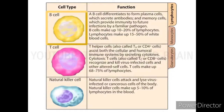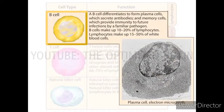A B cell differentiates to form plasma cells, which secrete antibodies, and memory cells, which provide immunity to future infections by a familiar pathogen. B cells make up 10 to 20 percent of lymphocytes. Lymphocytes make up 15 to 50 percent of white blood cells.